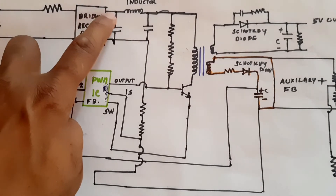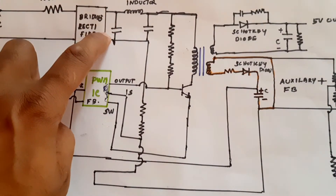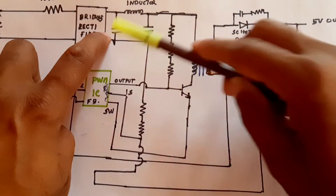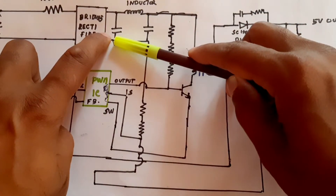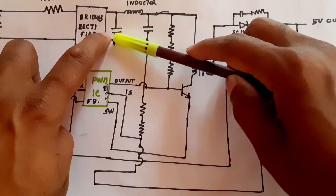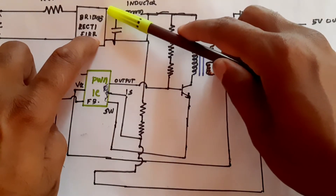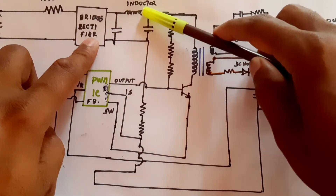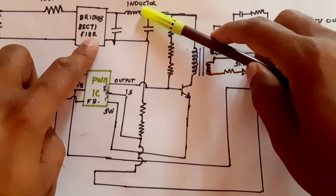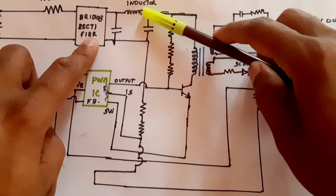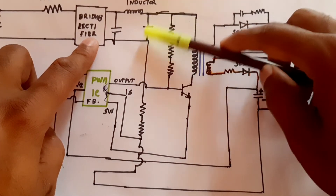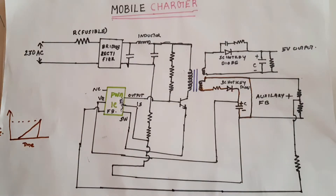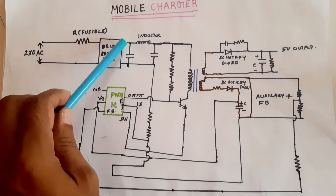The output of the bridge rectifier is connected to a capacitor, then an inductor, and after that another capacitor. The purpose of the capacitor is to eliminate the ripple from the output of the bridge rectifier, and the inductor will also smooth the ripple to get a more pure DC.